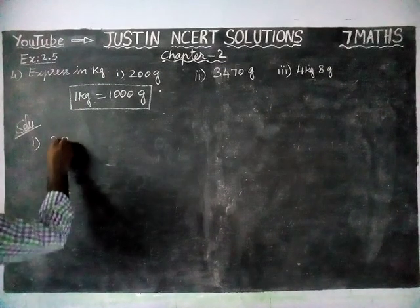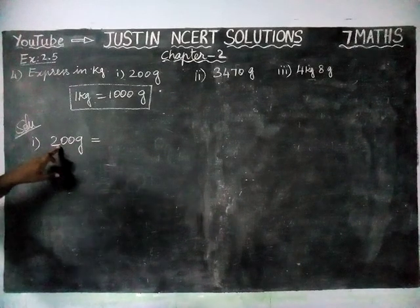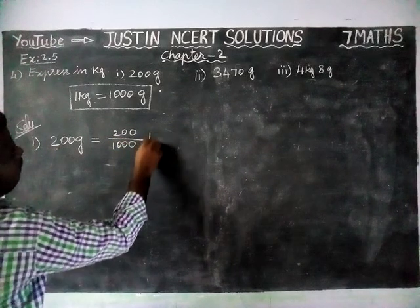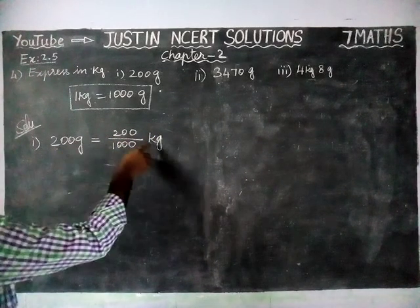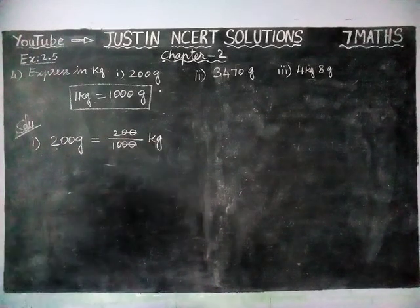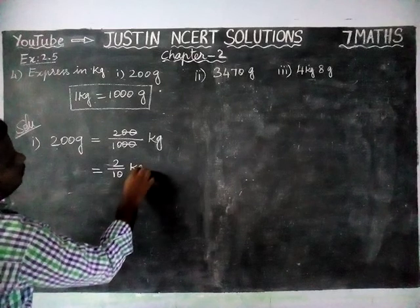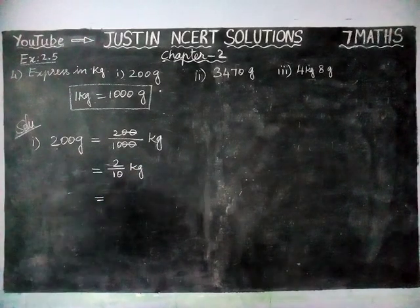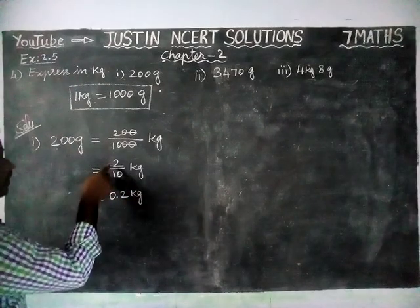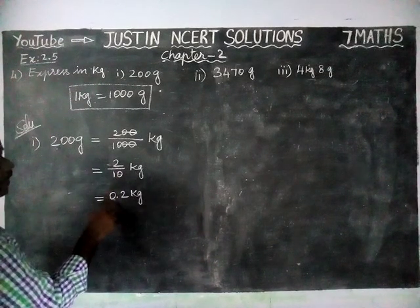First question: 200 grams is equal to — we are going to convert into kilograms, so we are going to divide by 1000. 200 divided by 1000 kilogram. The 2 zeros cancel, and remaining we have 2 divided by 10 kilogram, and this can be converted into 0.2 kilogram, because when dividing by 10 we make 1 decimal point to the left. So 0.2 kilogram.